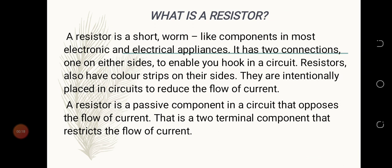What's a resistor? A resistor is a short worm-like component in most electronic and electrical appliances. It has two connections, one on either side, to enable you to hook it into a circuit. Resistors also have color strips on their sides. They are intentionally placed in a circuit to reduce the flow of current.